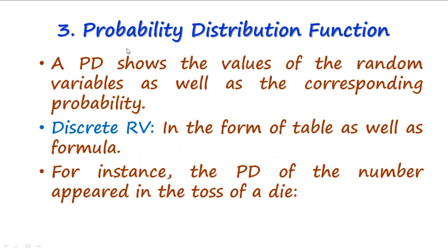The next concept is probability distribution, which is an extremely important concept for understanding sampling distributions and other topics. Probability distribution simply refers to the values of a random variable along with their corresponding probabilities. In the case of a discrete random variable, the probability distribution is simply a table or formula that shows the values of the variable along with their probabilities.